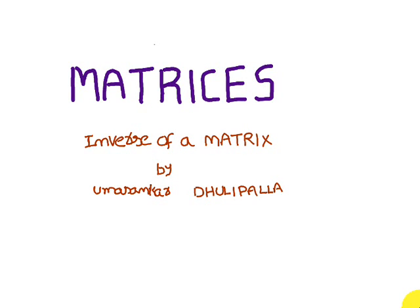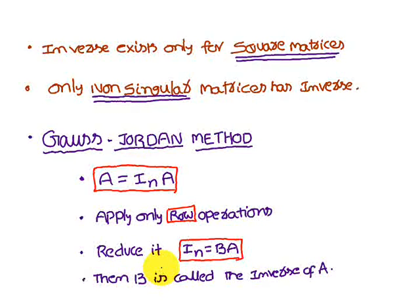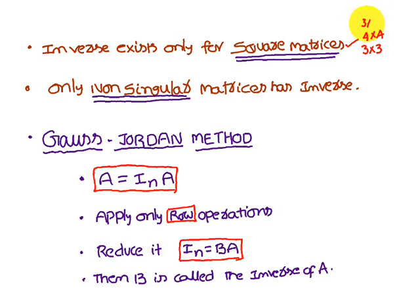Today we are going to discuss the inverse of a matrix — specifically whether the inverse exists for a square matrix or a non-square matrix. The first point is that the inverse exists only for square matrices. That means a 3x3 matrix has an inverse and a 4x4 matrix has an inverse, but a 3x4 matrix doesn't have an inverse.